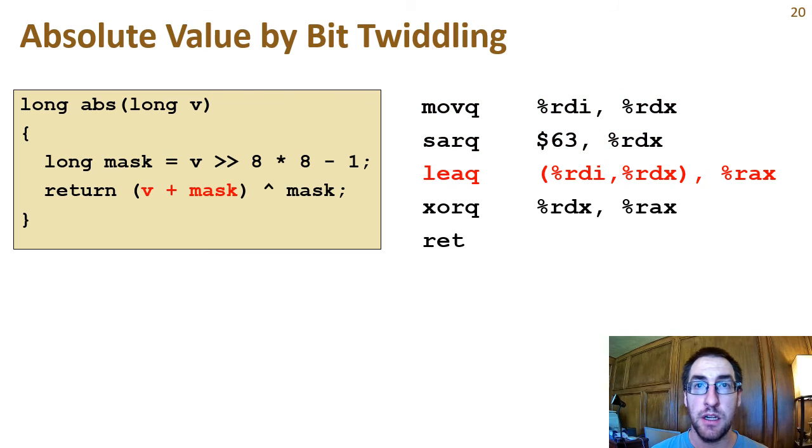Here, the intermediate result needs to go into a register, and we don't want to overwrite v, which is in the argument register RDI, or the mask, because we still need it for the XOR. So the LEAQ operation is used to add RDI and RDX, and the result is put in the RAX register. Now the intermediate result in RAX is XORed with the mask in RDX, and the result is put in the RAX register, because we want to return it. The function returns with the return value in RAX.